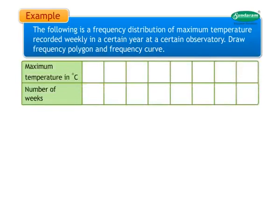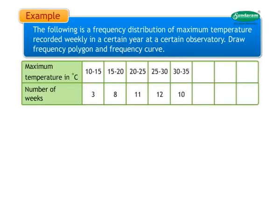The frequency distribution for the temperature recorded is as follows: 10°C to 15°C was recorded for 3 weeks; 15°C to 20°C for 8 weeks; 20°C to 25°C for 11 weeks; 25°C to 30°C for 12 weeks; 30°C to 35°C for 10 weeks; 35°C to 40°C for 5 weeks; 40°C to 45°C for 3 weeks. Total number of weeks: 52.